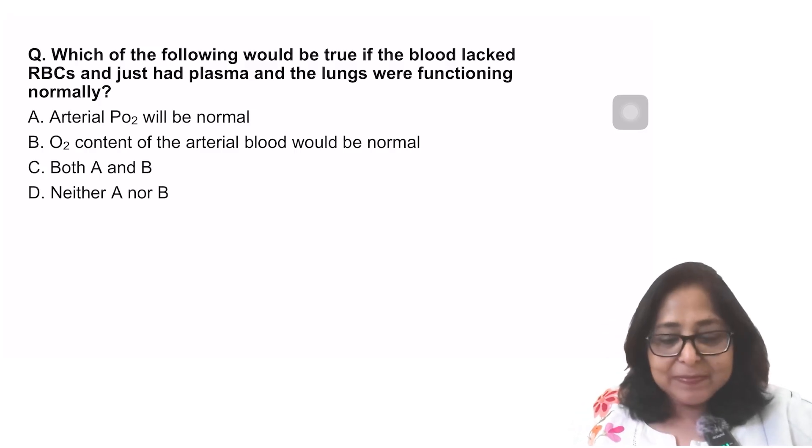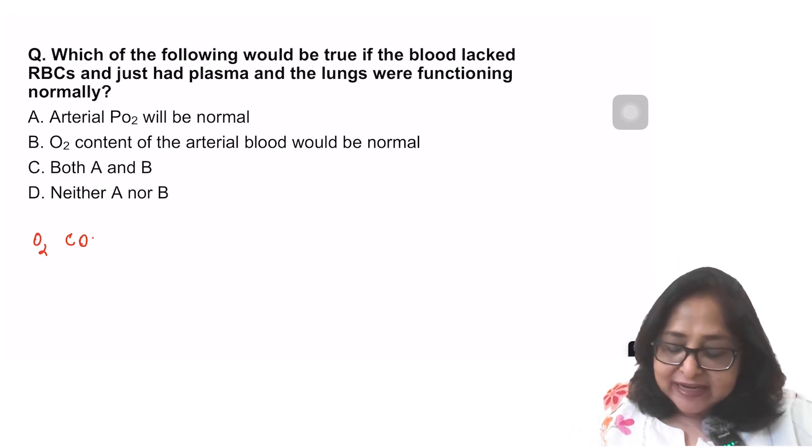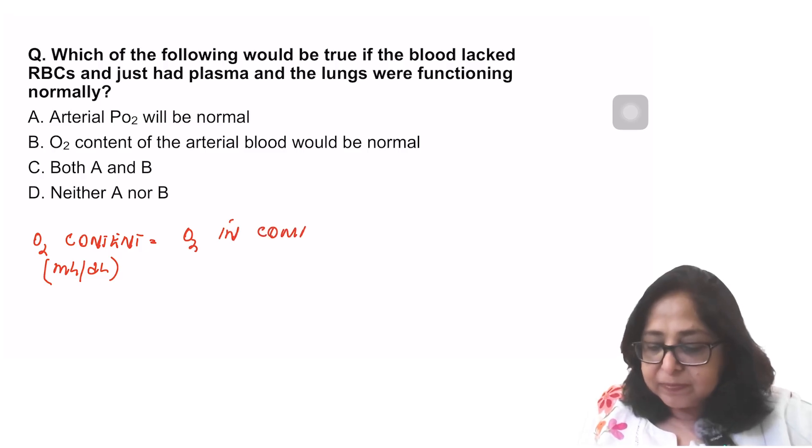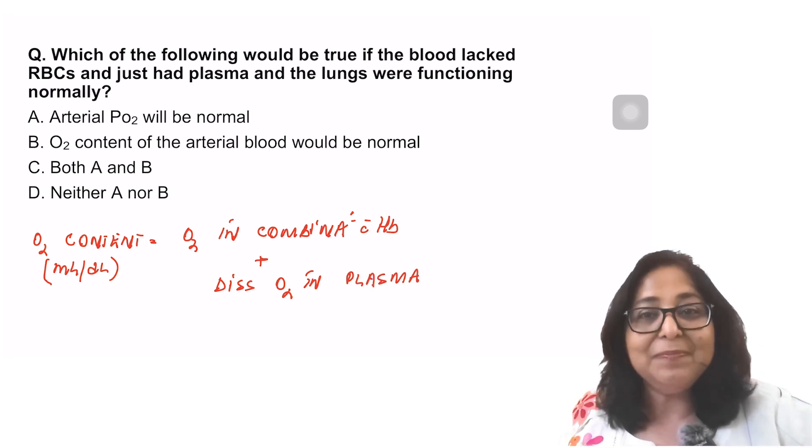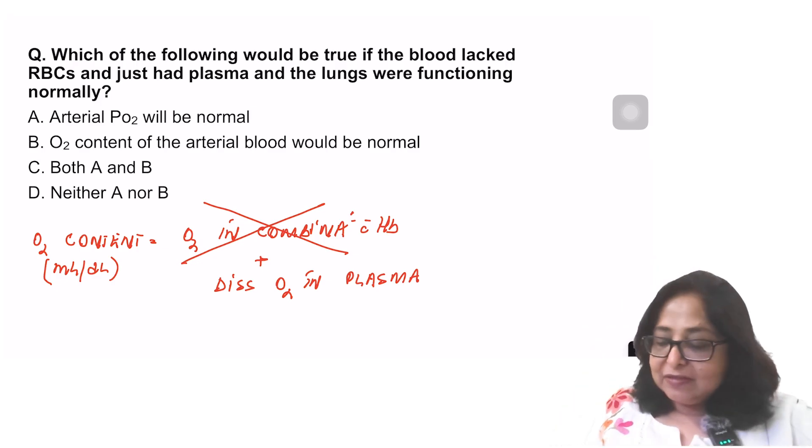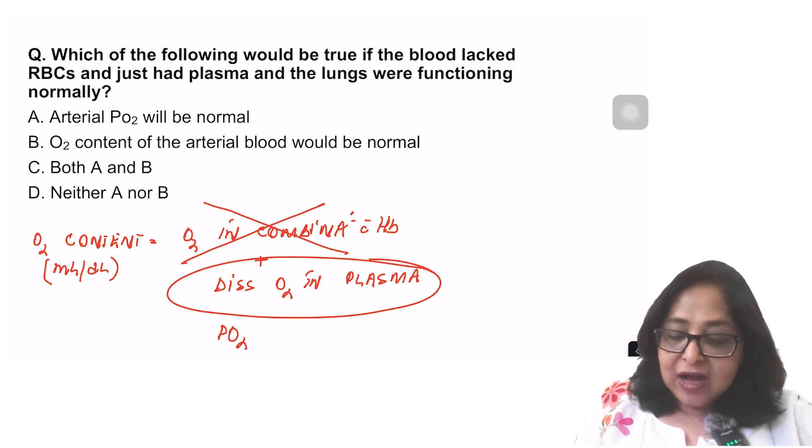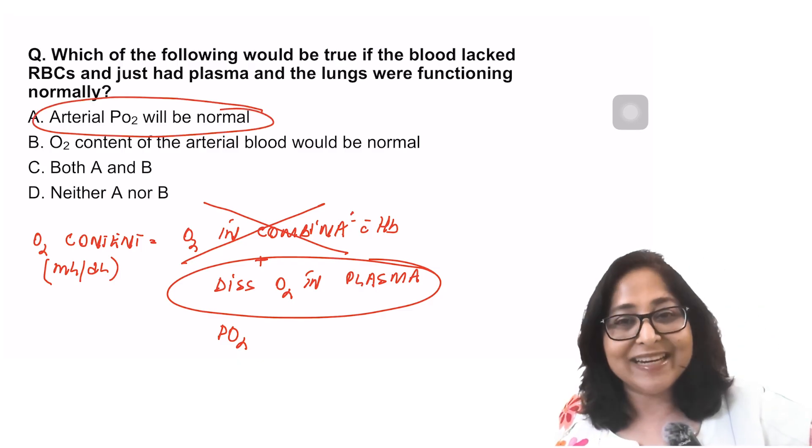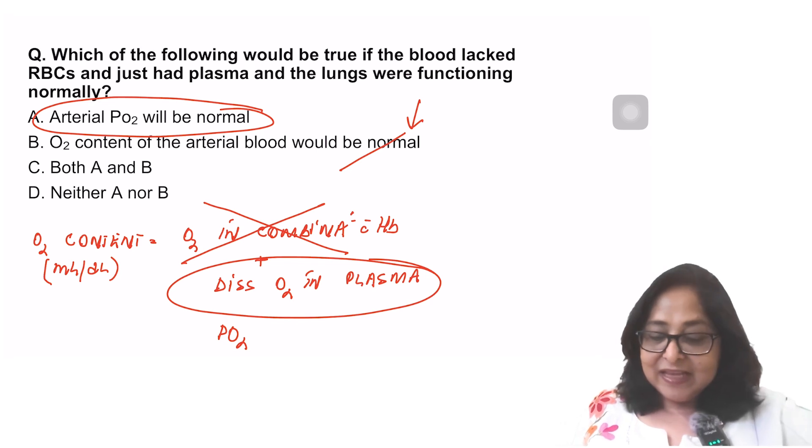Which of the following would be true if the blood lacked RBCs and just had plasma and the lungs were functioning normally? When you look at the oxygen content of the blood, oxygen content is in ml per 100 ml. This is oxygen in combination with hemoglobin plus the dissolved oxygen in plasma. The dissolved oxygen in plasma is measured in terms of PO2 in millimeters of mercury. So if there are no RBCs, oxygen in combination with hemoglobin will not be present. But the dissolved oxygen in plasma, which is nothing but the PO2, will be normal. So arterial PO2 will be normal, but oxygen content will be reduced because oxygen in combination with hemoglobin is not present.